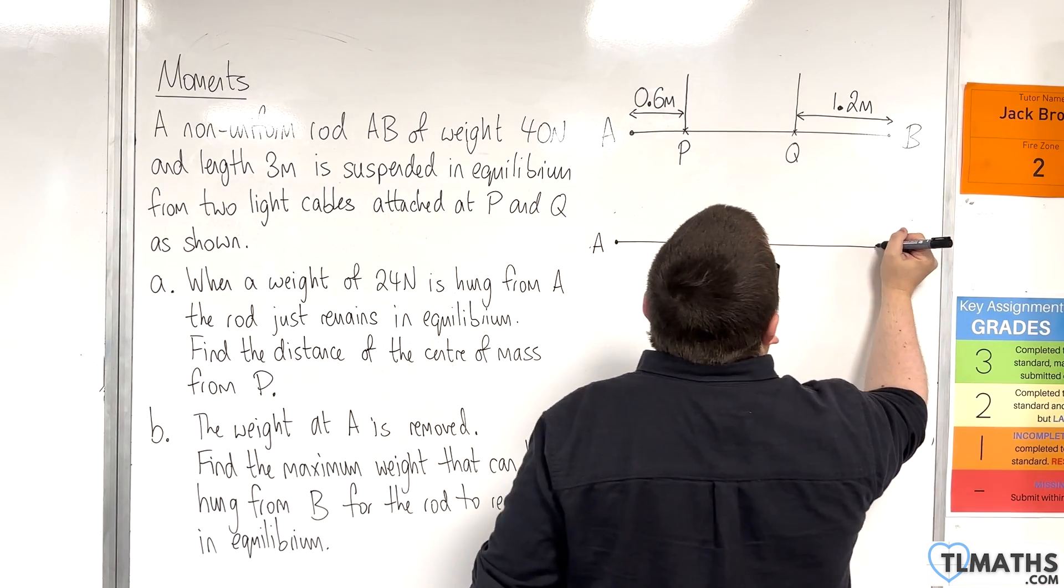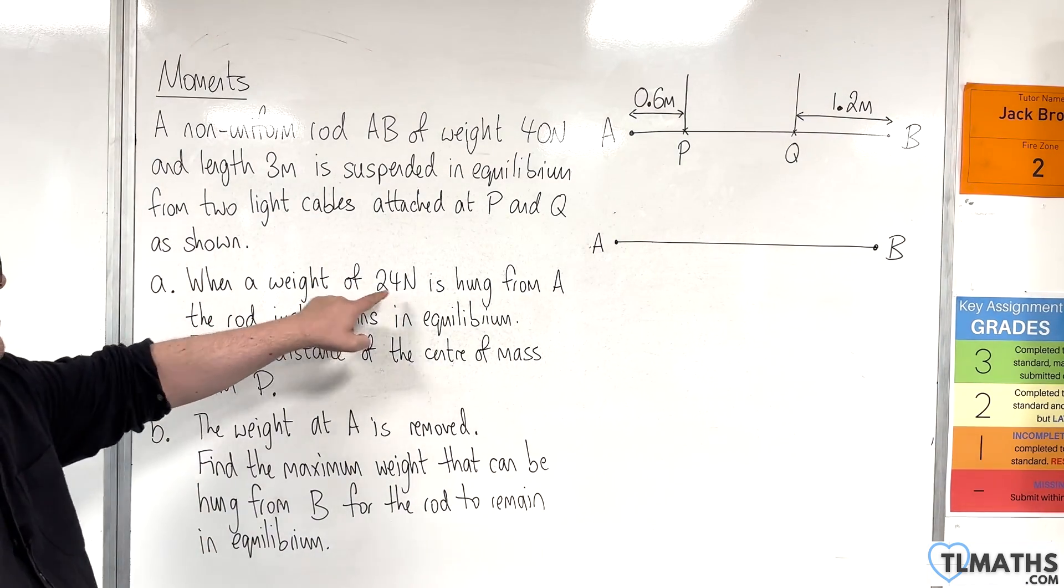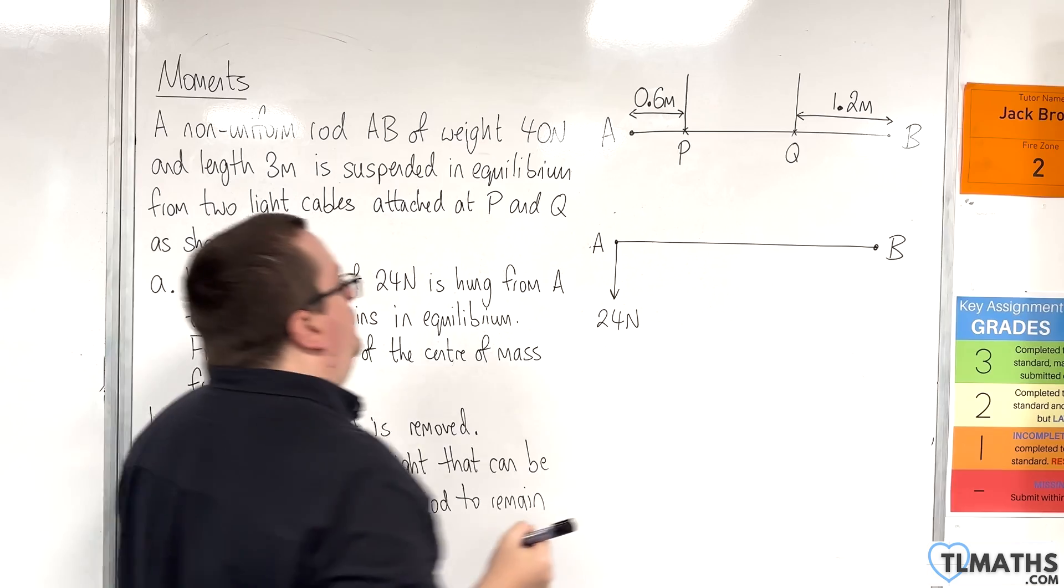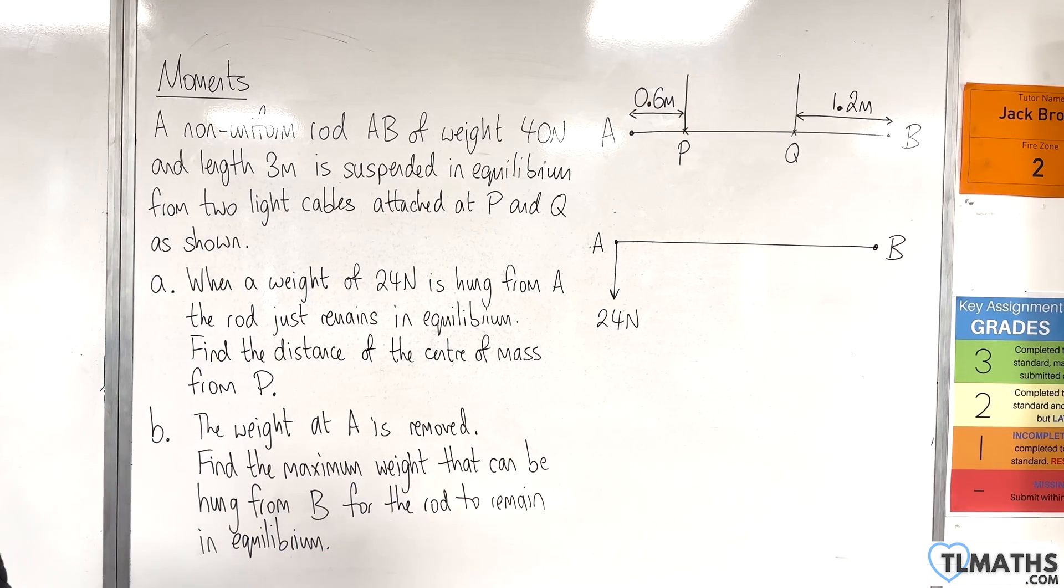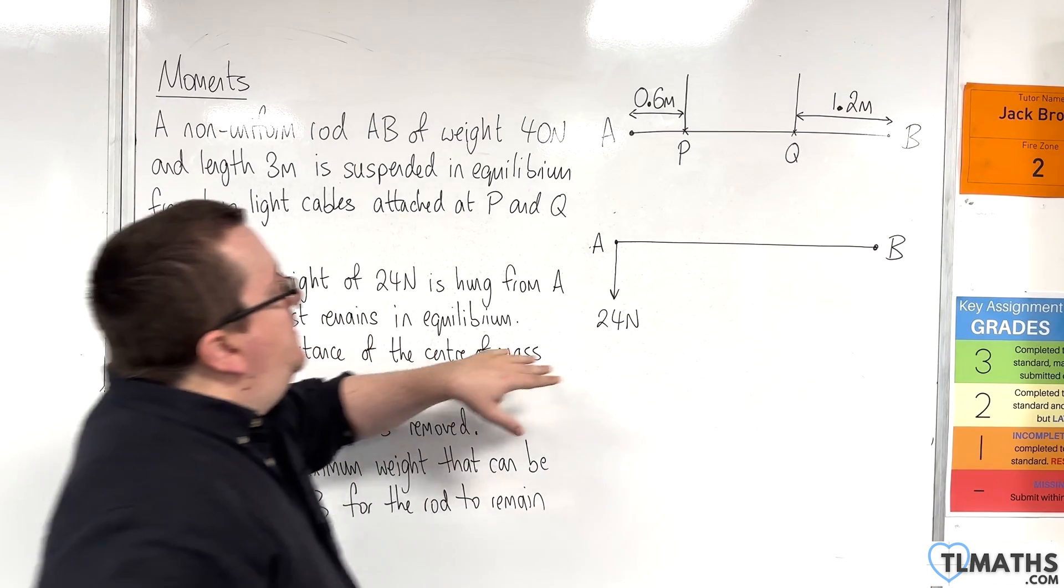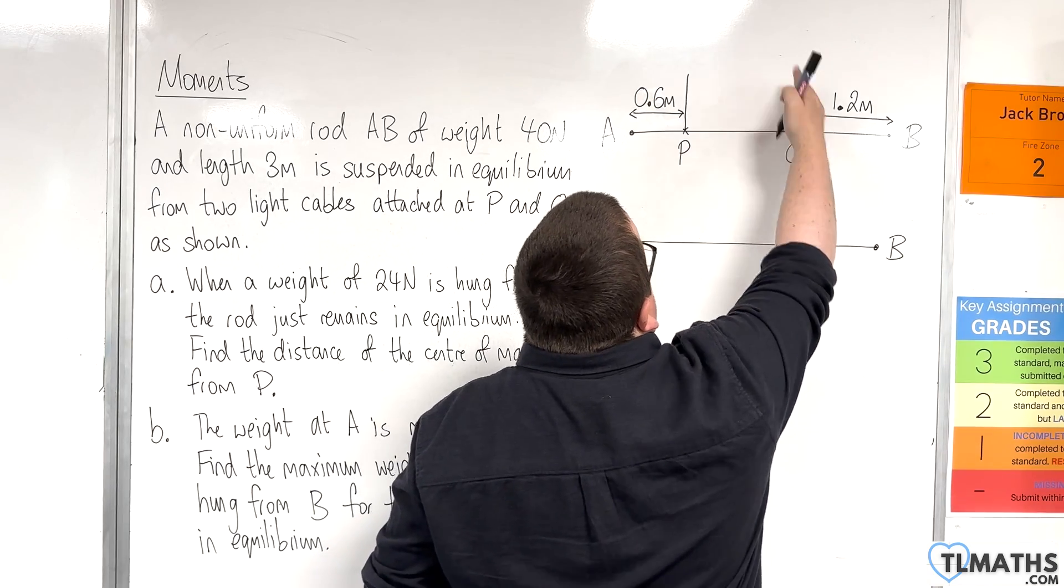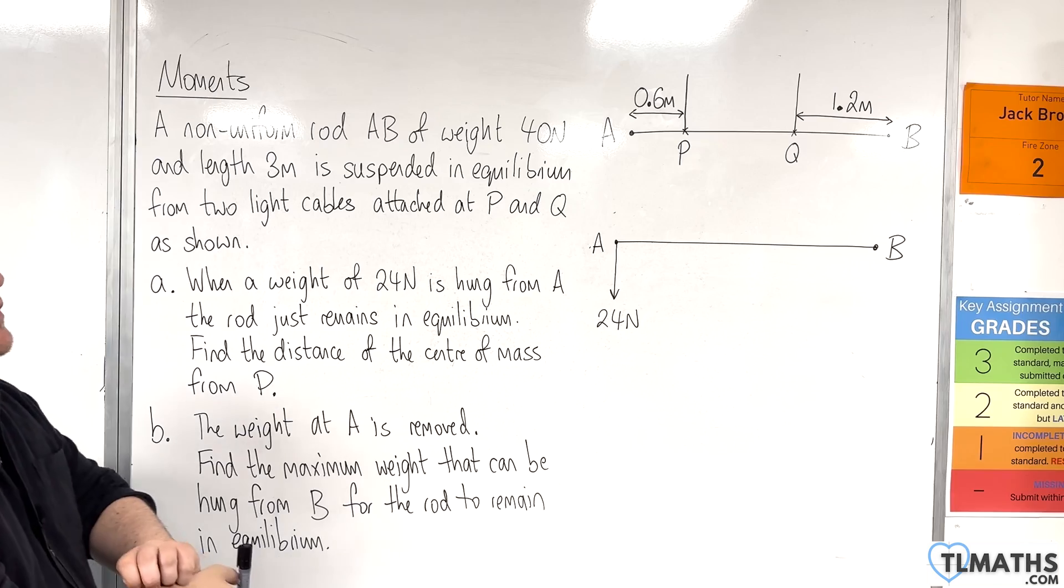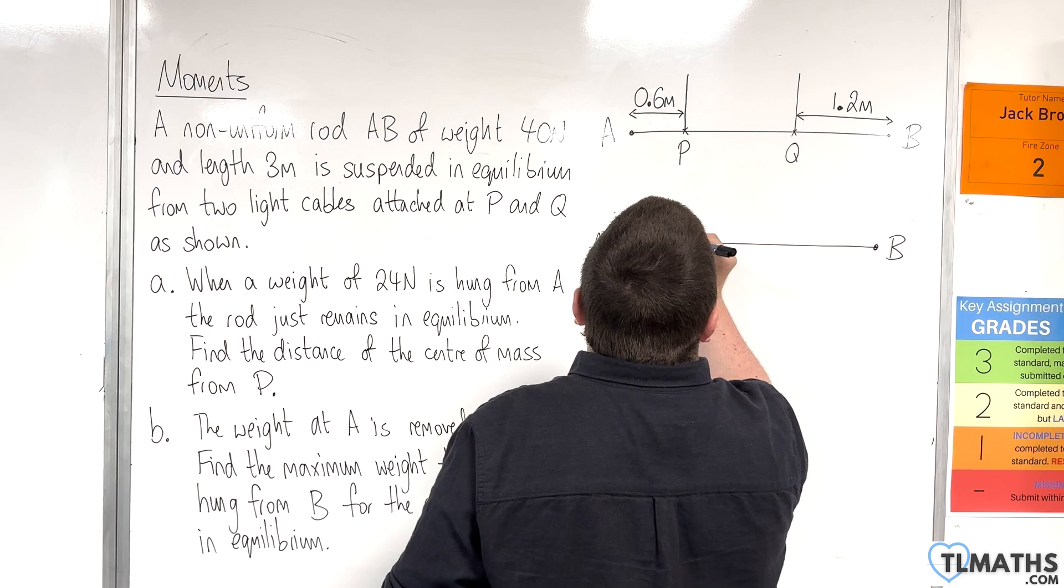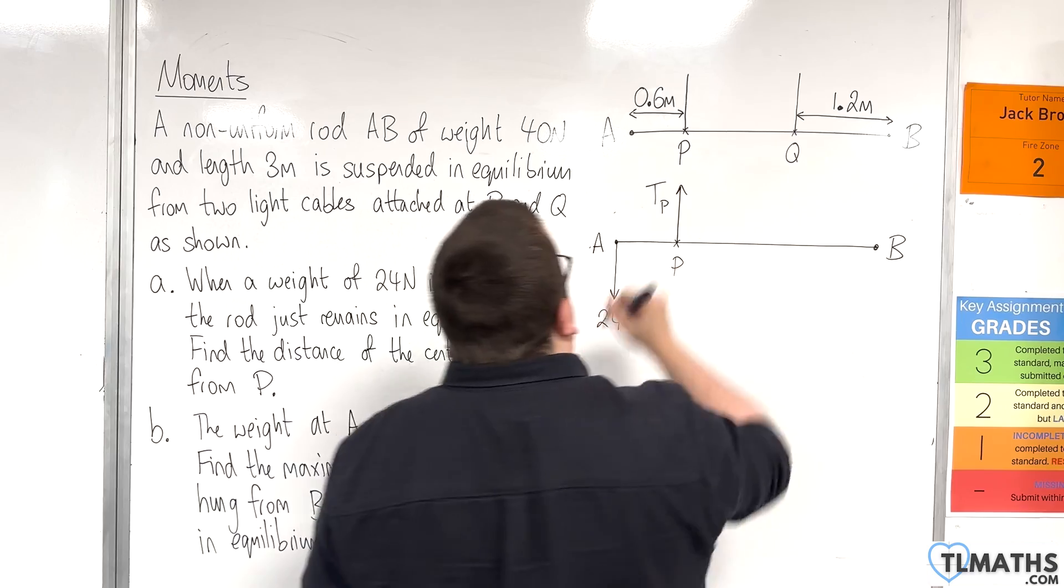There's A and B. Now we're going to hang a weight of 24 newtons from A, and the rod just remains in equilibrium. So if that's the case, then everything is going to be pulled through P and the rope or the string at Q is going to go slack. So we can ignore the tension at Q.